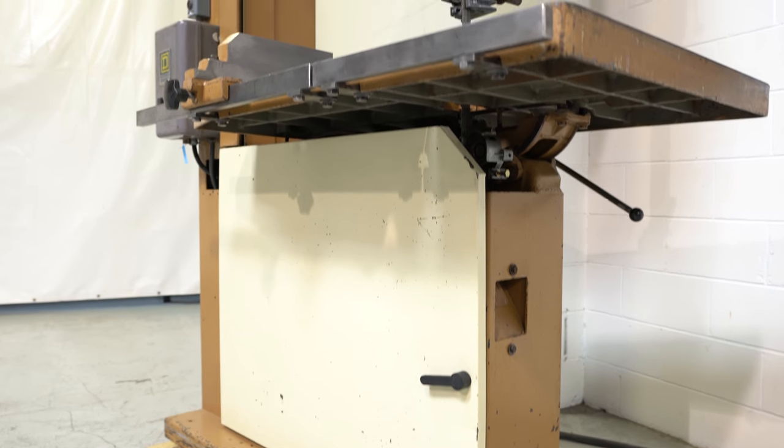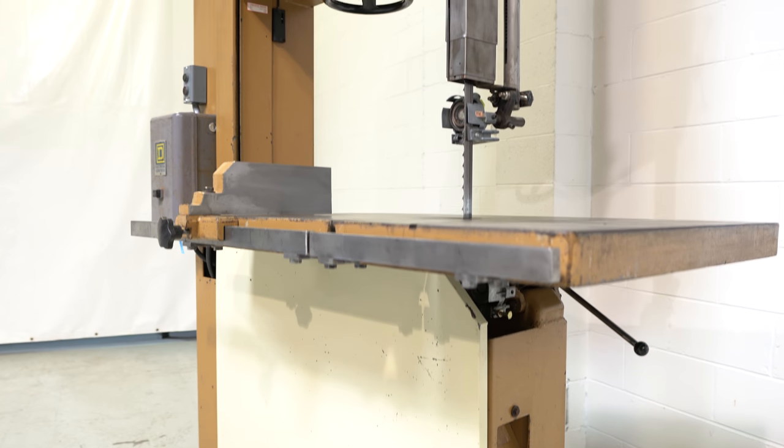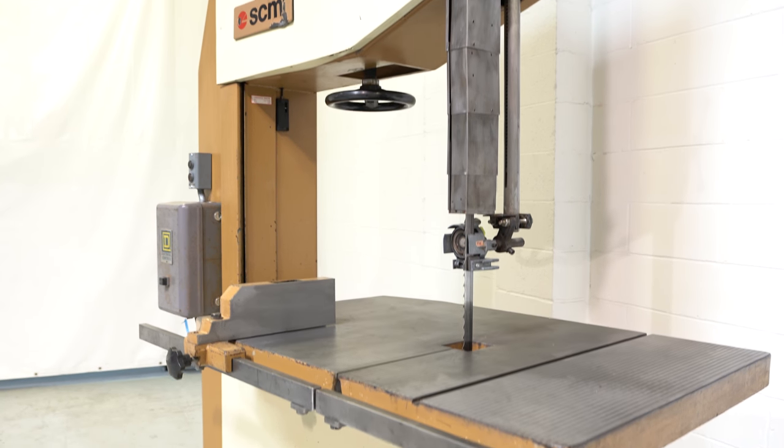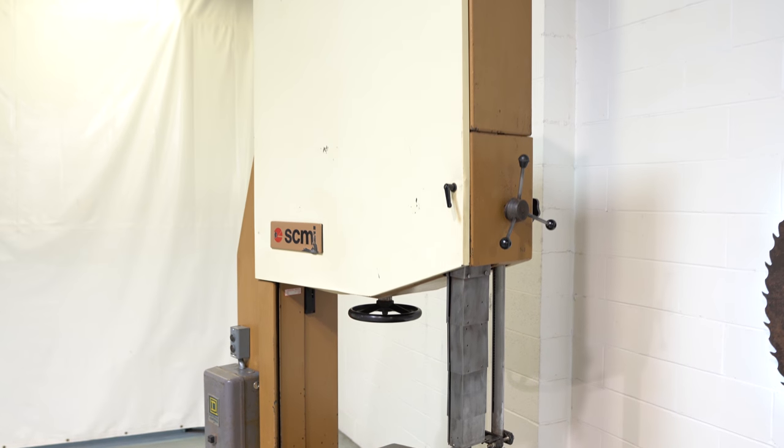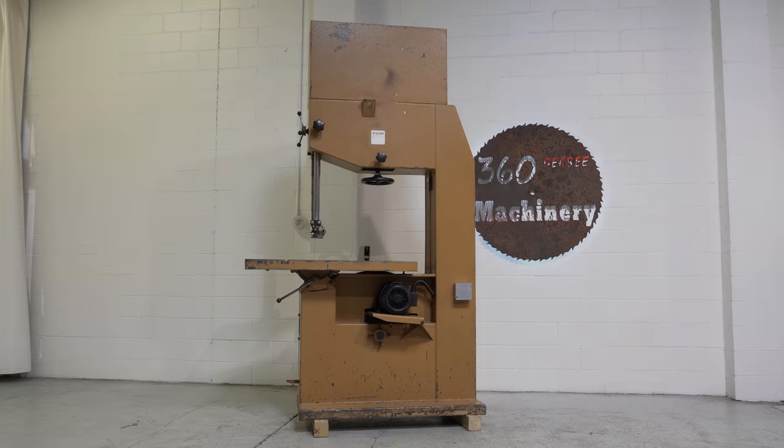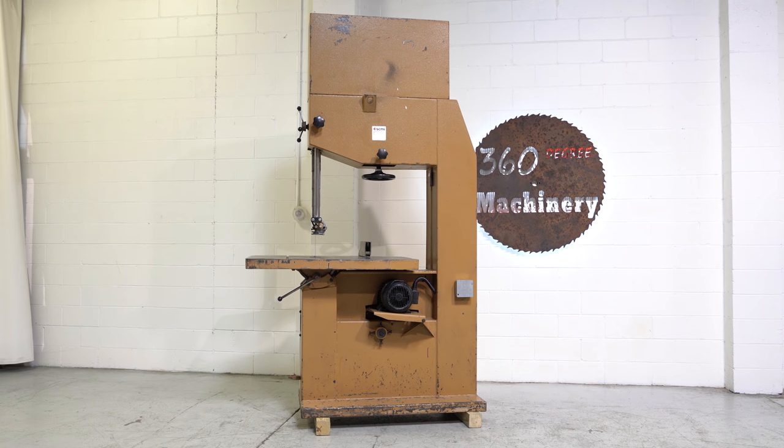This machine is powered by a nine horsepower motor, currently wired 230 volt three-phase, and you do have 22 and a quarter inches of clearance from the top of the table to the bottom of the tensioning wheel.